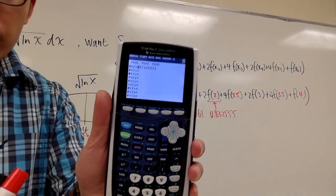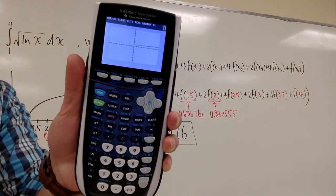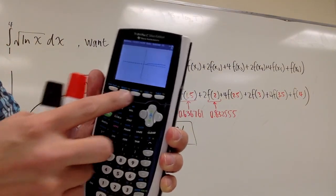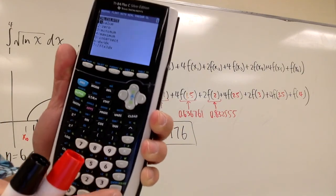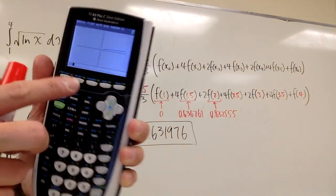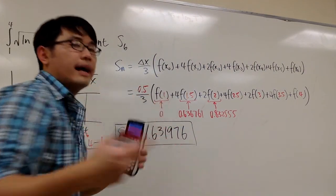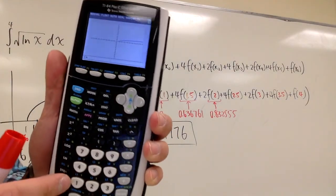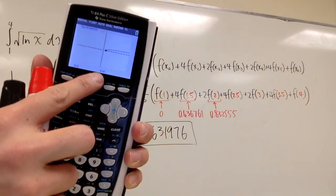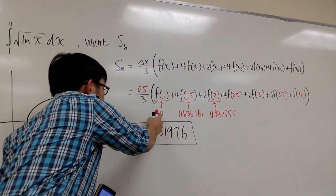So we graph this equation, and you see that we have this graph. Go to second calc, and then we choose value. When x equals 1, I need to know the y value. So I press x equals 1, and I get the y value is 0.